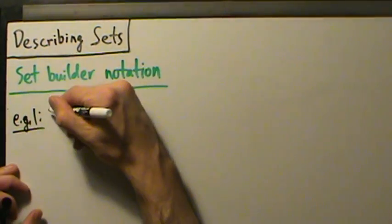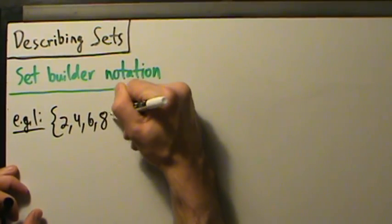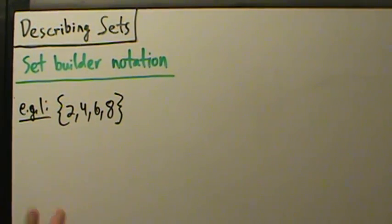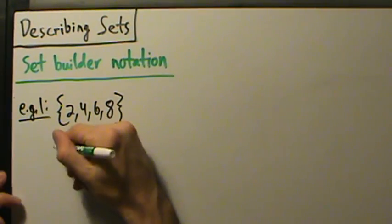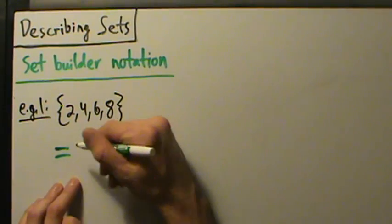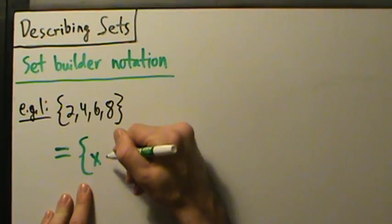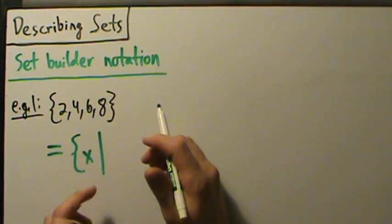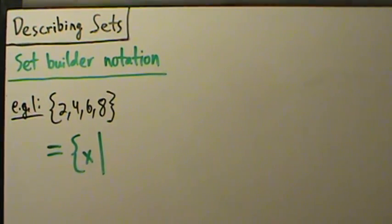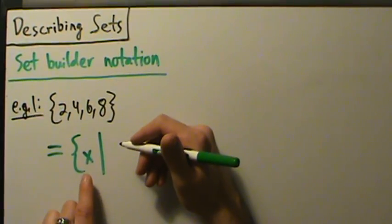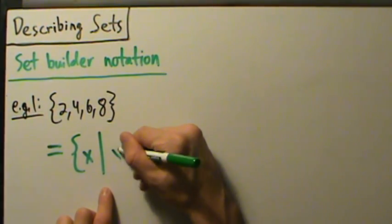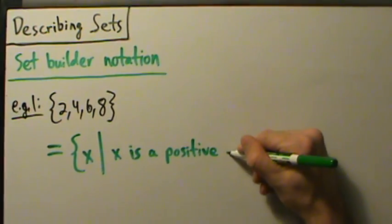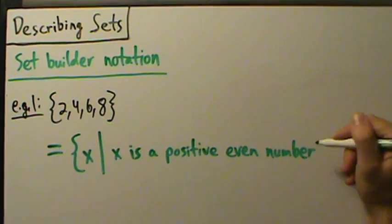Let's recall example two from the previous video: the set {2, 4, 6, 8}. That was the listing method — we literally listed out all the elements. Now let's describe this using set-builder notation. We open with a curly brace, start with a variable name — x is typical. Then we put a vertical bar, which is read 'such that.' So we write: x such that x is a positive even number less than 10.